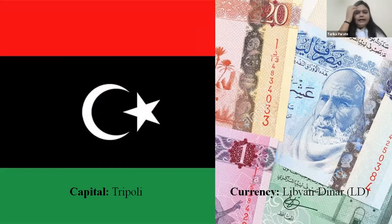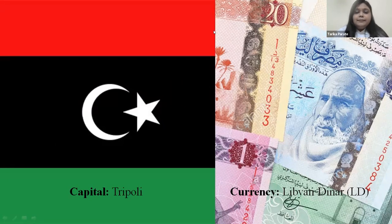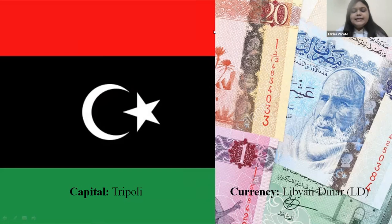The flag of Libya consists of Pan-Arab colors — black, white, green, and red. Each of the colors individually represents a historical Arab dynasty. Black was the Abbasid dynasty color, white was the Umayyad dynasty color, green was the Fatimid dynasty color, and red was the Hashemite dynasty color.